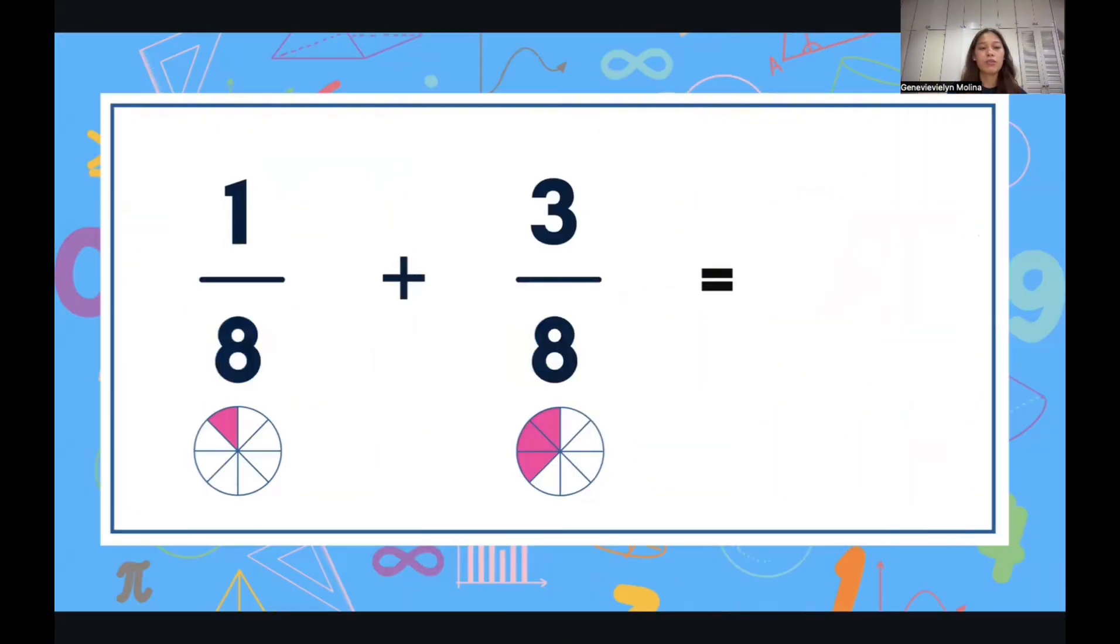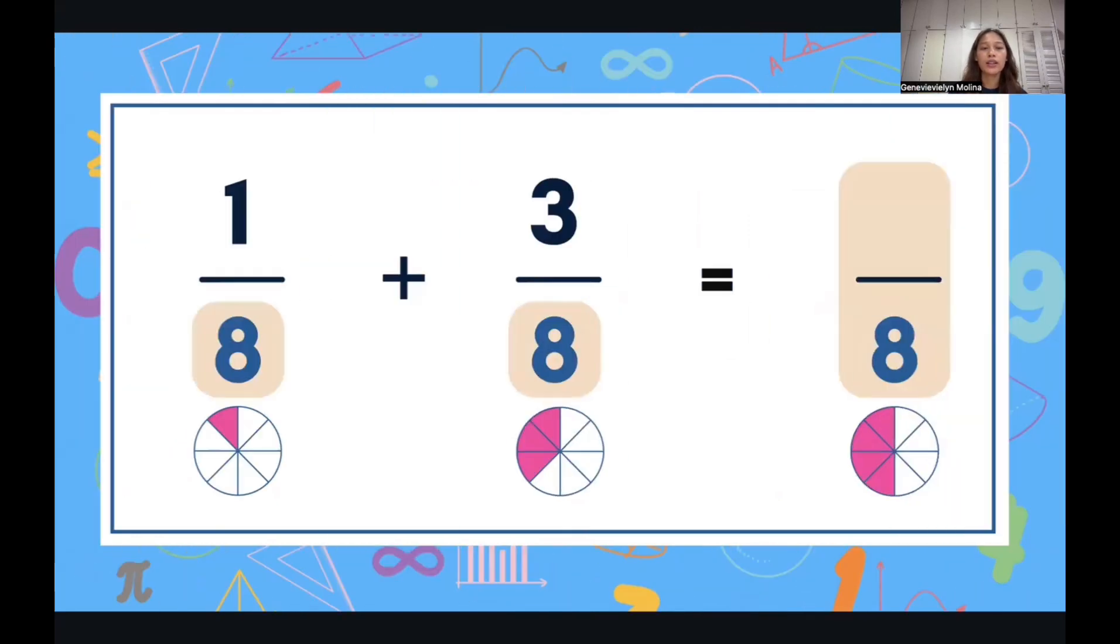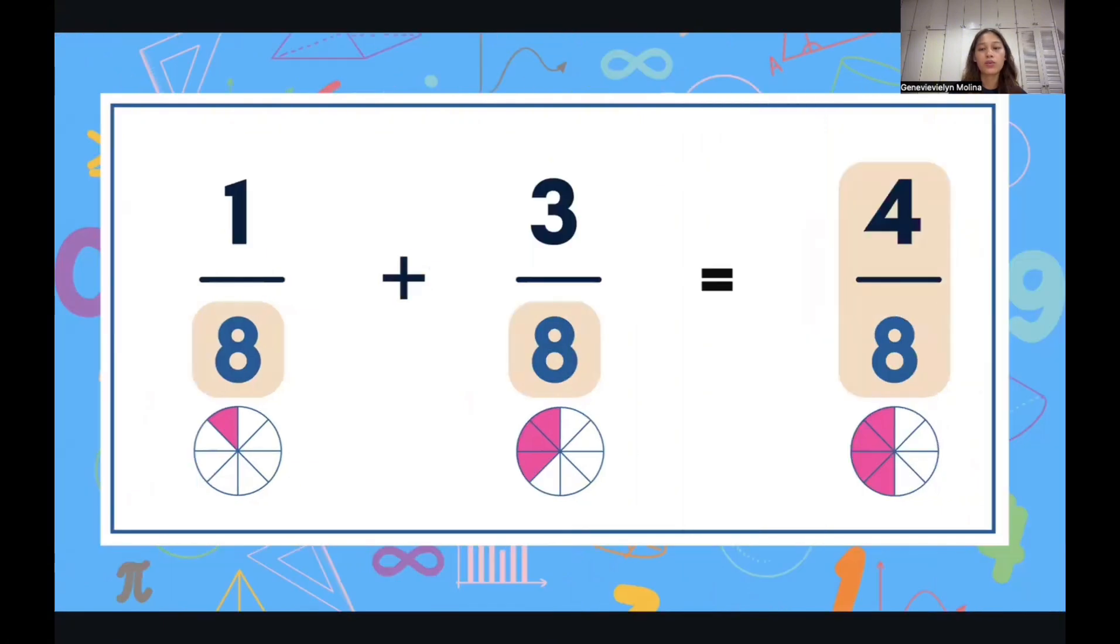So for our last problem, we have 1 eighth plus 3 eighths, so copy the denominator, 8, and then add the numerators, 1 plus 3 is equal to 4, so we'll get 4 eighths.